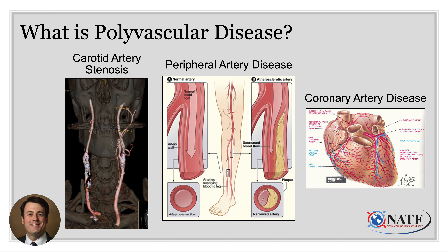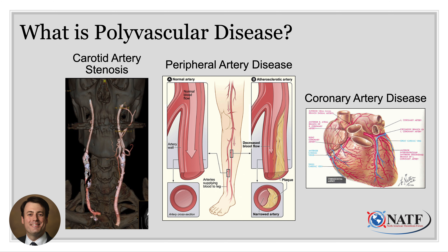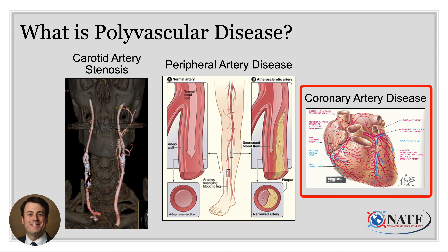When we talk about polyvascular disease, we're talking about atherosclerosis in your arteries. Atherosclerosis can affect pretty much any artery in your body, but we typically focus on three main categories. One being carotid artery stenosis — cholesterol and atherosclerosis buildup in the arteries in your neck that feed your brain. Here you can see a CAT scan with a pretty large blockage in this artery. We also think about peripheral artery disease, which is atherosclerosis in the arteries of your legs. And then, of course, coronary artery disease — atherosclerosis in the arteries feeding your heart muscle itself. Collectively, atherosclerosis in these three main areas remains the leading cause of death in the U.S. and in the world.